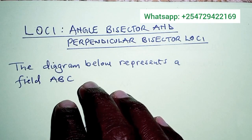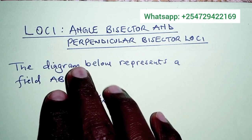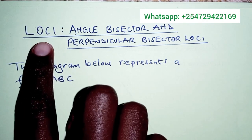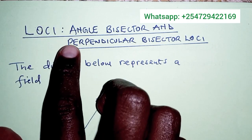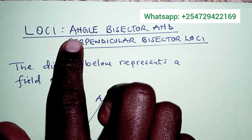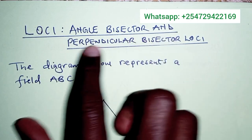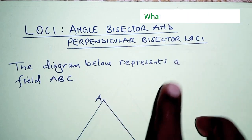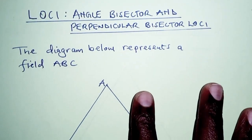Hello everyone, welcome to today's presentation. In this video we are going to discuss the topic loci and we are going to look at two types of loci: angle bisector and perpendicular bisector loci. We are going to use this question to explain this.